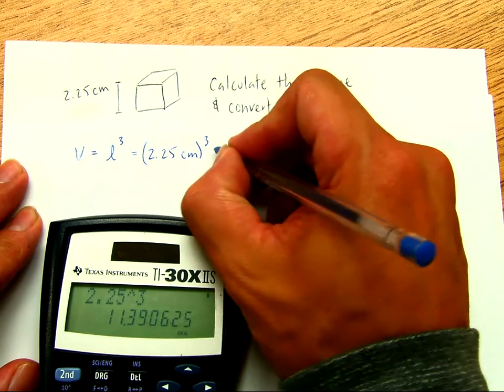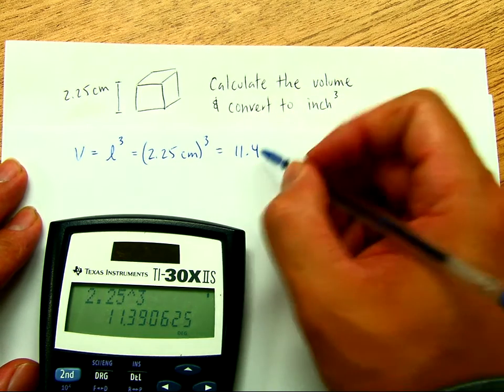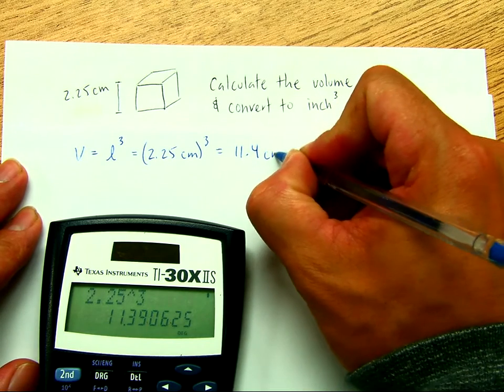So, 2.25 cubed is 11.4, let's round there, since this is 3 sig figs, and we have cm cubed.